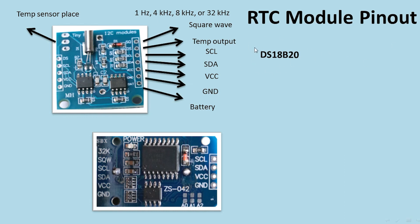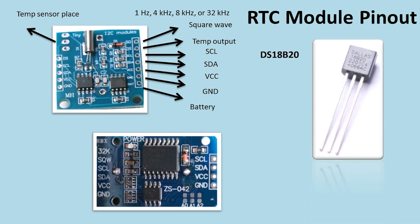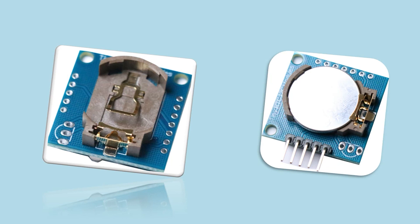The DS18B20 temperature sensor pinout: one pin is the positive power supply (VCC), the middle pin is the data line, and the other is ground. It is a very easy digital sensor that you can use conveniently.